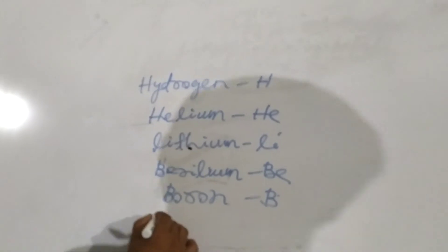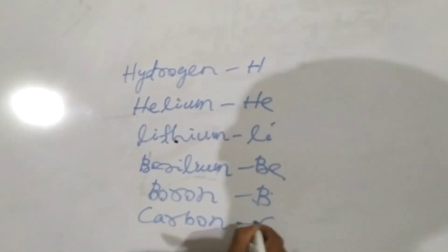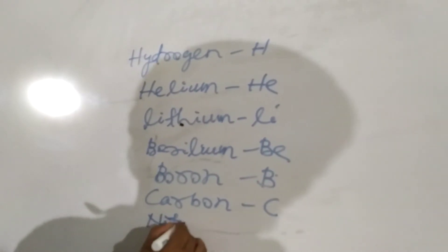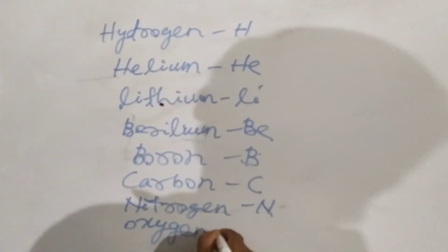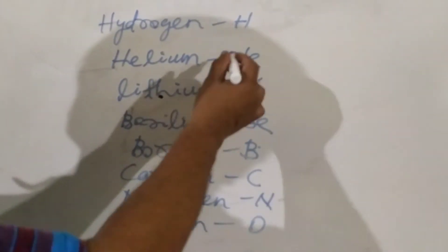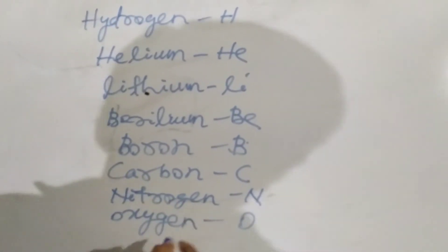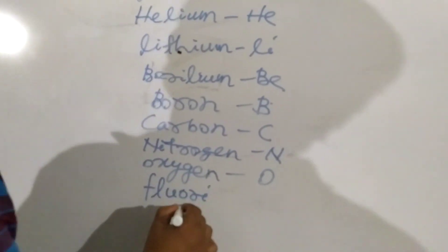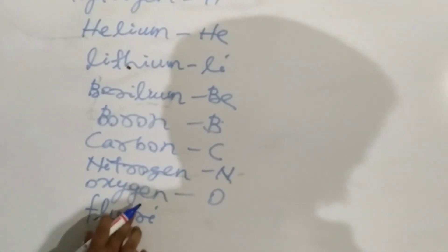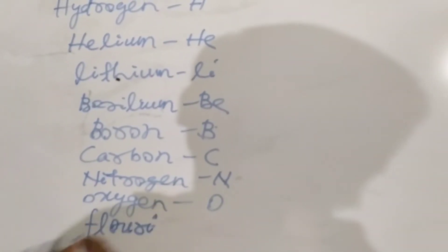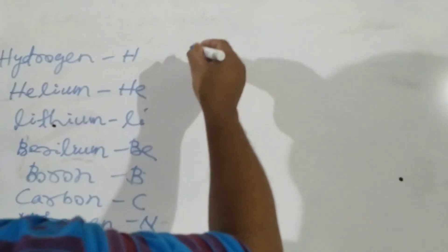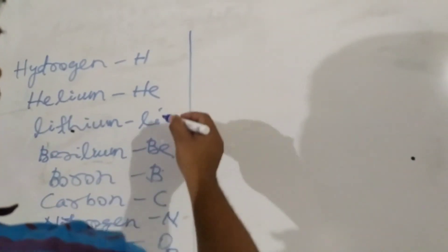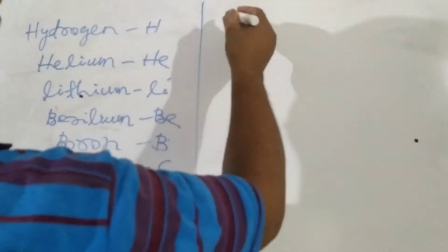Boron, carbon, nitrogen, oxygen, then fluorine. Fluorine F. Neon.